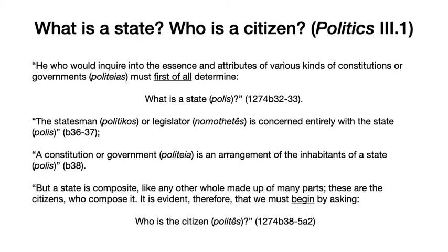As Aristotle points out, the one who would inquire into the essence and attributes of various kinds of constitutions or governments — that is, politeias in Greek — must first of all determine what is a state. And in Greek, the question is: what is a polis? Now, polis is sometimes translated city, sometimes state, sometimes city-state. It's related to some other terms that Aristotle immediately invokes. So the statesman or politikos, or legislator, the nomothetis, is concerned entirely with the state or polis, because the root of the word statesman just means person who is concerned with the polis.